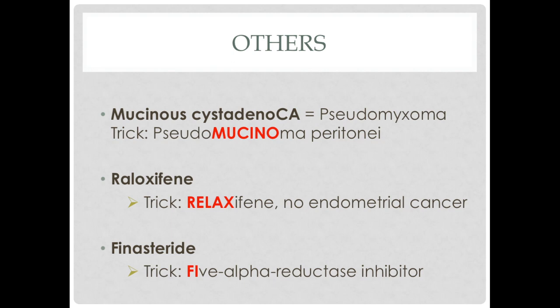Raloxifene is given for breast cancer — remember it as 'raloxifene' because, unlike tamoxifen, it does not cause endometrial cancer. Finasteride: think of the 'FI' in finasteride for 5-alpha reductase inhibitor, used for benign prostatic hypertrophy. There's another one called flutamide that is used for actual prostate cancer. Remember, finasteride is the one that inhibits 5-alpha reductase.